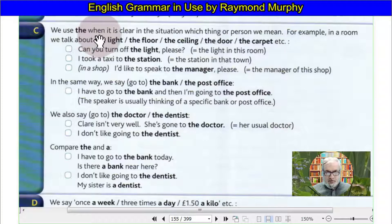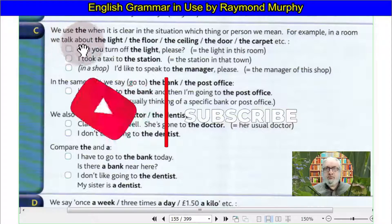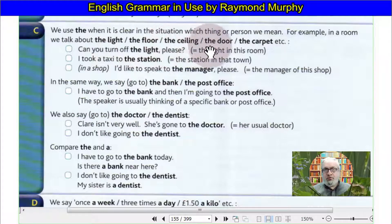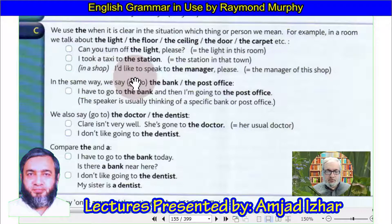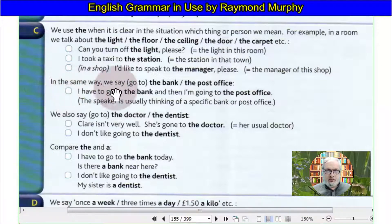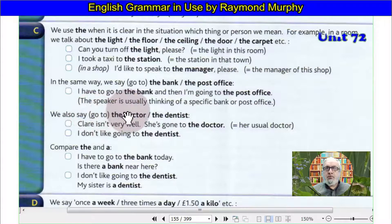We use THE when it is clear in the situation. We think the person is in the room — we talk about the light, the floor, the ceiling, the door, the carpet. 'Can you turn off the light please?' — the light in this room. 'I took a taxi to the station.' 'I would like to speak to the manager' — the manager of the shop. In the same way we say 'go to the bank, the post office.' The speaker is usually thinking of a specific bank or post office.